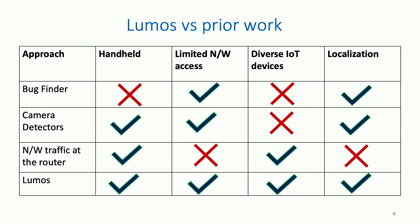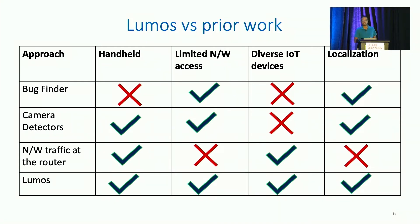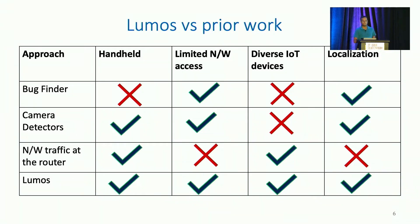None of the prior works are applicable for our scenario. They either require dedicated hardware, privileged network access, or they cannot detect all types of IoT devices. Our system, Lumos, is the only one that can detect and localize IoT devices while working with limited access and by just using a mobile phone or a laptop.